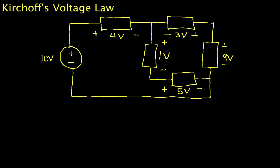The idea behind Kirchhoff's voltage law is that the sum of voltages that you encounter as you go through any closed path in a circuit is equal to zero. I've drawn a circuit here with a 10-volt source and components with 4 volts, 3 volts, 1 volt, 9 volts, and 5 volts across them.